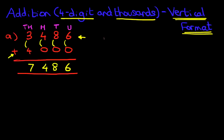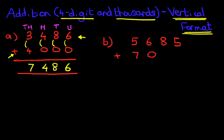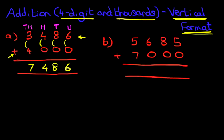That was a nice easy one which didn't have any carrying. Let's have a look at our next one. This time we have 5,685 plus 7,000. We're going to label the columns again — thousands.